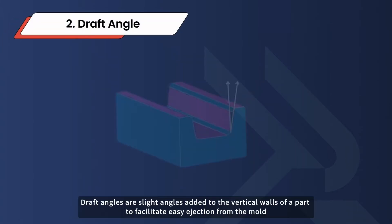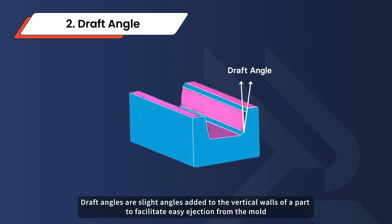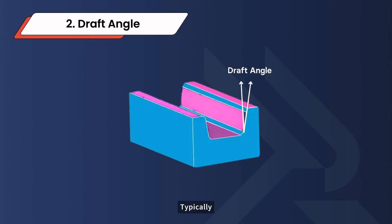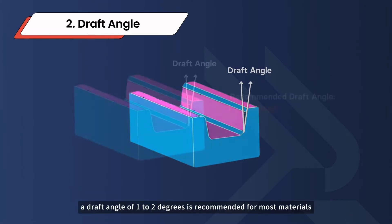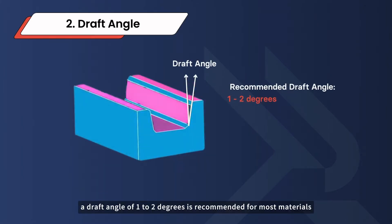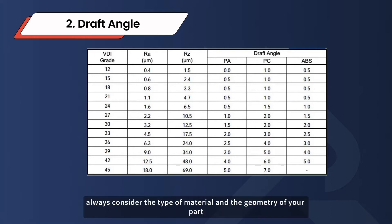Next, draft angles. Draft angles are slight angles added to the vertical walls of a part to facilitate easy ejection from the mold. Typically, a draft angle of 1 to 2 degrees is recommended for most materials, but this can vary based on the specific material and part geometry. When designing, always consider the type of material and the geometry of your part.